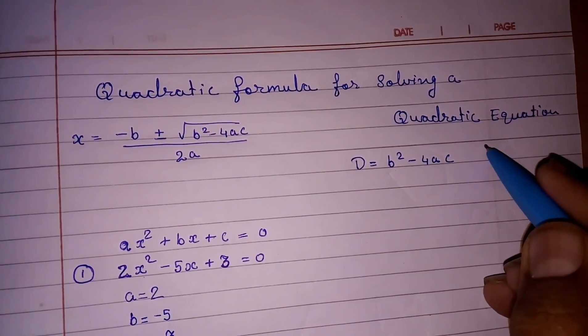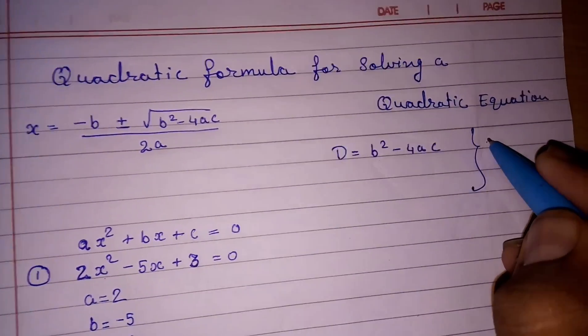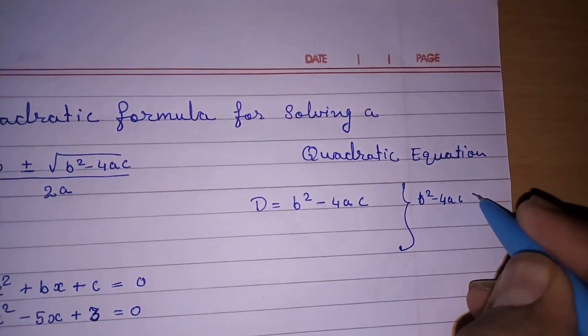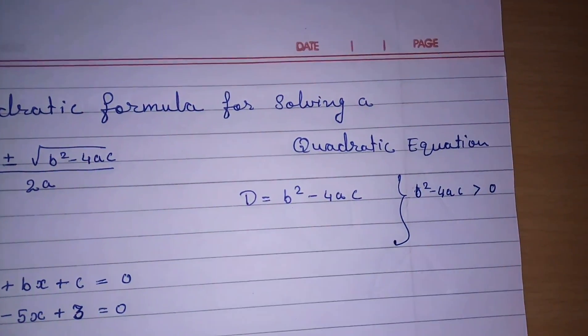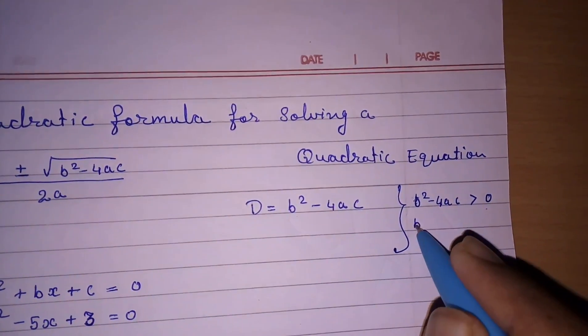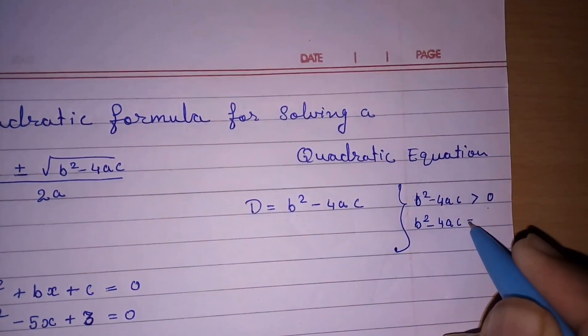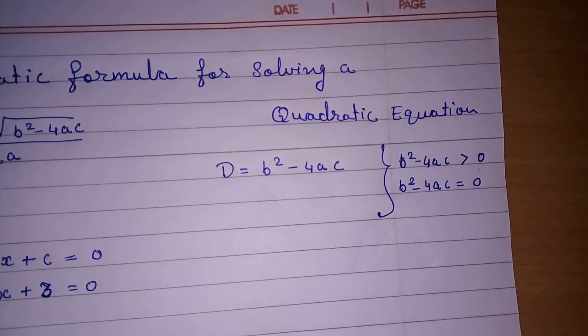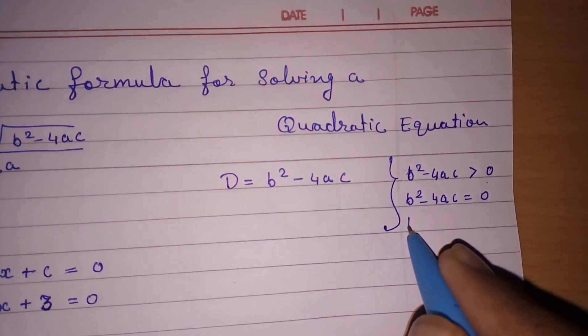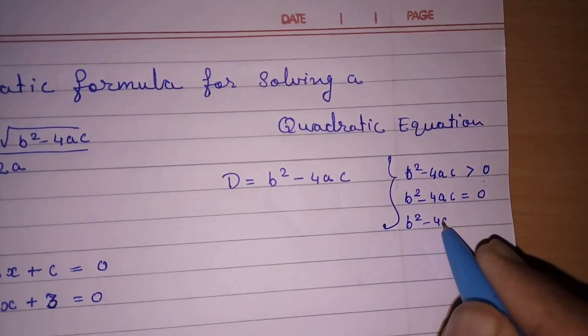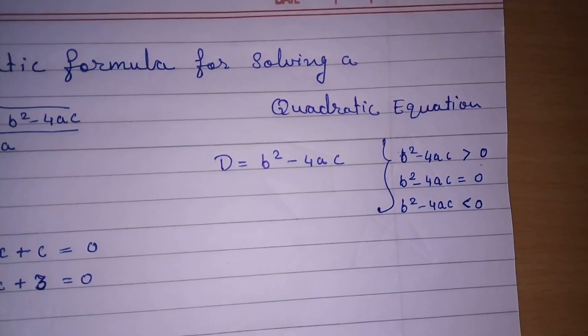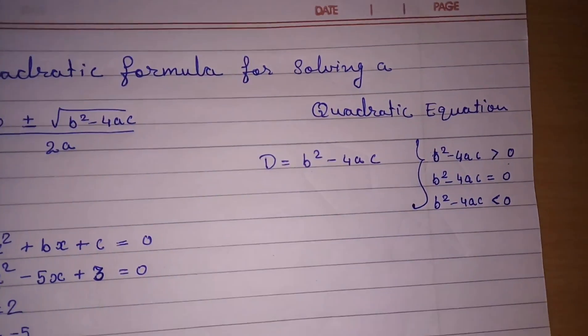If we will find, there are three conditions for b² - 4ac. If b² - 4ac is greater than 0, then we can find the roots. We will get two different roots. If b² - 4ac is equal to 0, we will get two roots and both will be equal, means two equal real roots. And if b² - 4ac is less than 0, means it will be a negative number, then we cannot find the roots of this equation.